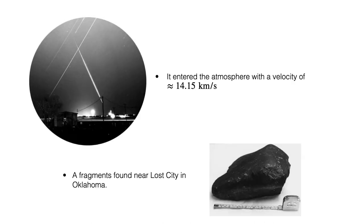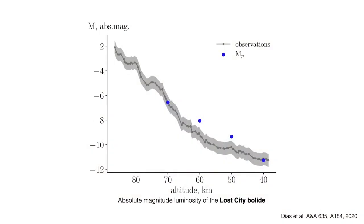The final step of this project was to combine all the models mentioned previously and to simulate the entry of the Lost City bolide. Our method allows us to estimate the light emitted by the bolide and thus correlate it with the observations made on January 3, 1970. In this figure, we show the magnitude of the Lost City luminosity and the comparison with our models. Despite the complexity of the problem, we have obtained a fair match with the observations, giving us confidence in our methodology.